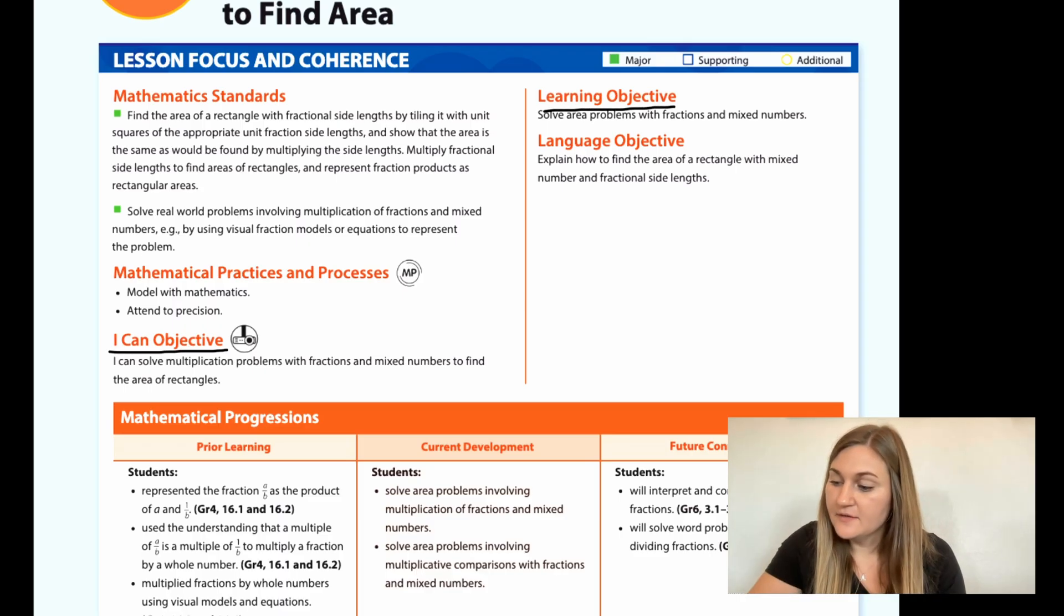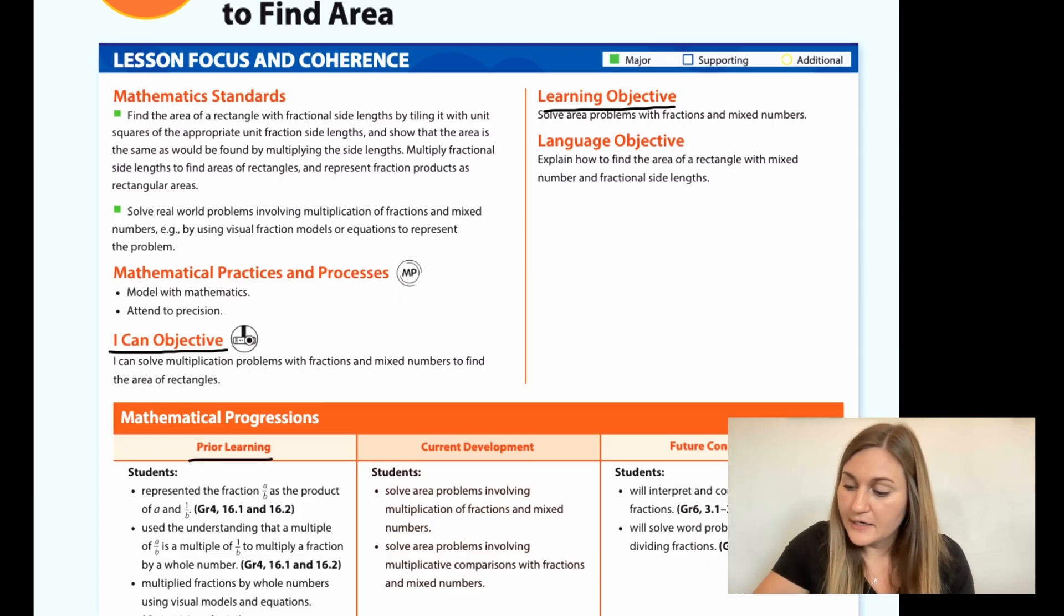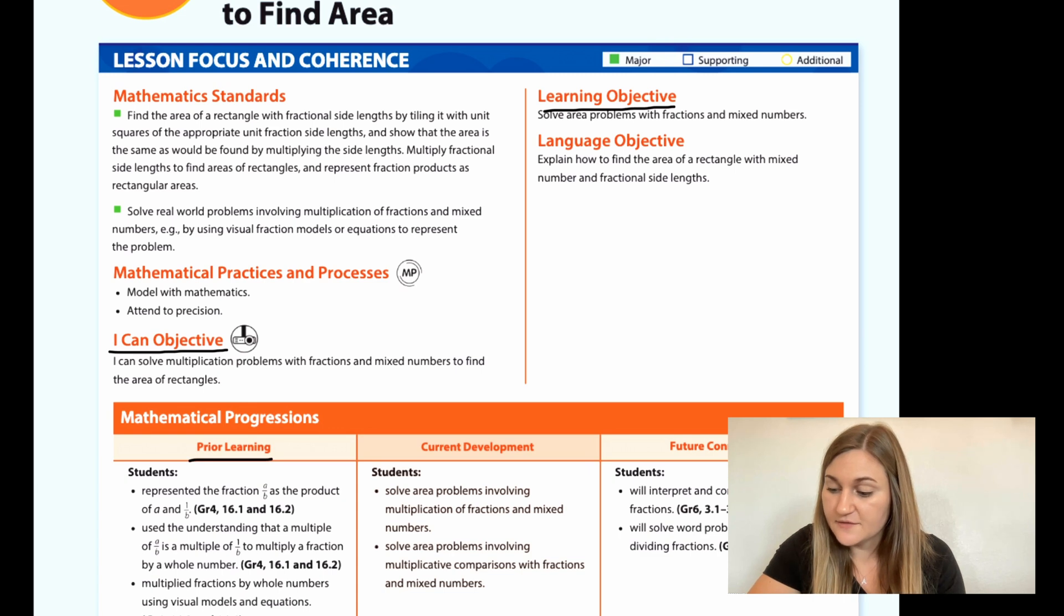The learning objective is to solve area problems with fractions and mixed numbers. The prior learning is that students represented the fraction A over B as the product of A and 1 over B. Students used the understanding that a multiple of A over B is a multiple of 1 over B to multiply a fraction by a whole number, and students multiplied fractions by whole numbers using visual models and equations.